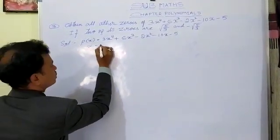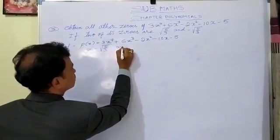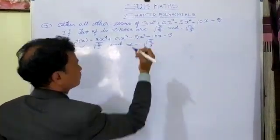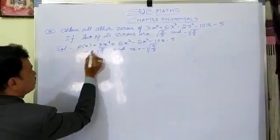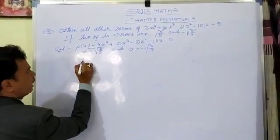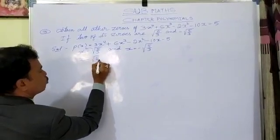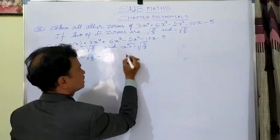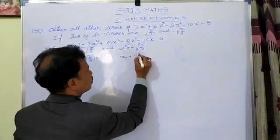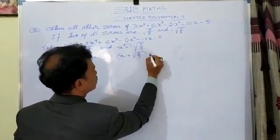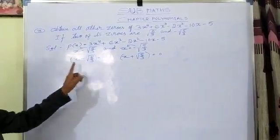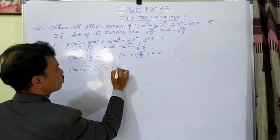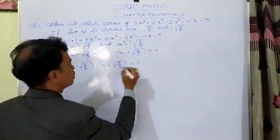Now x is equal to square root of 5 by 3 and x is equal to minus square root of 5 by 3. We take these to the left-hand side, so they become: x minus square root of 5 by 3 equals 0, and x plus square root of 5 by 3 equals 0. Now we take these two together: x minus square root of 5 by 3, multiplied by x plus square root of 5 by 3, equals 0.